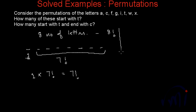And if we talk about the number of words which will start with T and end with C, in that case we will have one choice for this place, which will be T, and we will have one choice for the last place, which will be C. And in between, we will have total six places and six letters.